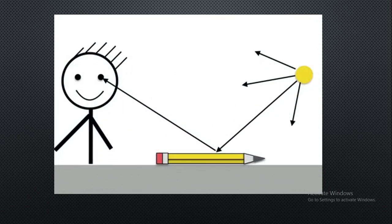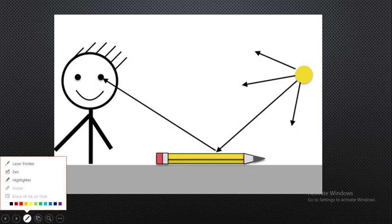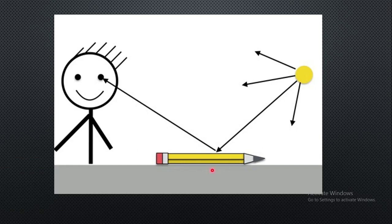For example, the pencil is a non-luminous object. The Sun or a light source, which is a luminous object, will emit light onto the pencil. That light will then be reflected to our eye, and only then can we see the non-luminous object. So in order to see a non-luminous object, we need the light rays of a luminous object.